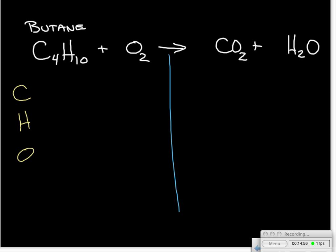We start with carbon. One molecule of butane has four carbon atoms, but on the right-hand side one molecule of CO₂ contains just one carbon atom. We can fix that quickly — putting a 4 in front of CO₂ gives us four carbon atoms on the product side, and carbon is balanced. Now we look at hydrogen: one molecule of butane contains ten hydrogen atoms. Our water molecule contains two hydrogens each, so we need five water molecules — five times two gives us ten hydrogen atoms. Hydrogen is now balanced.